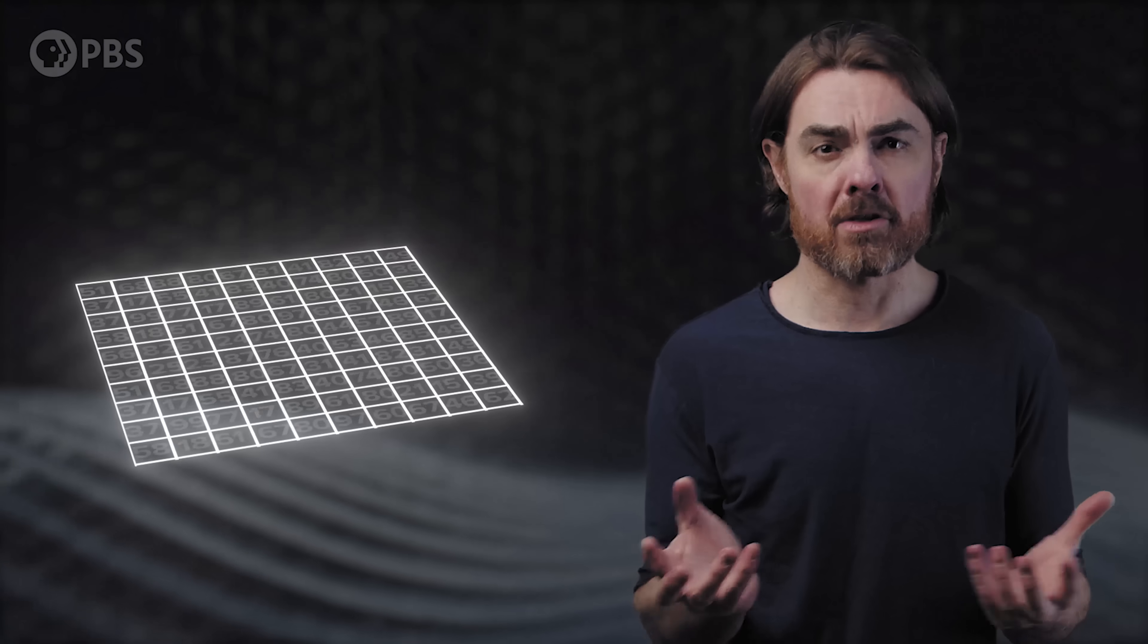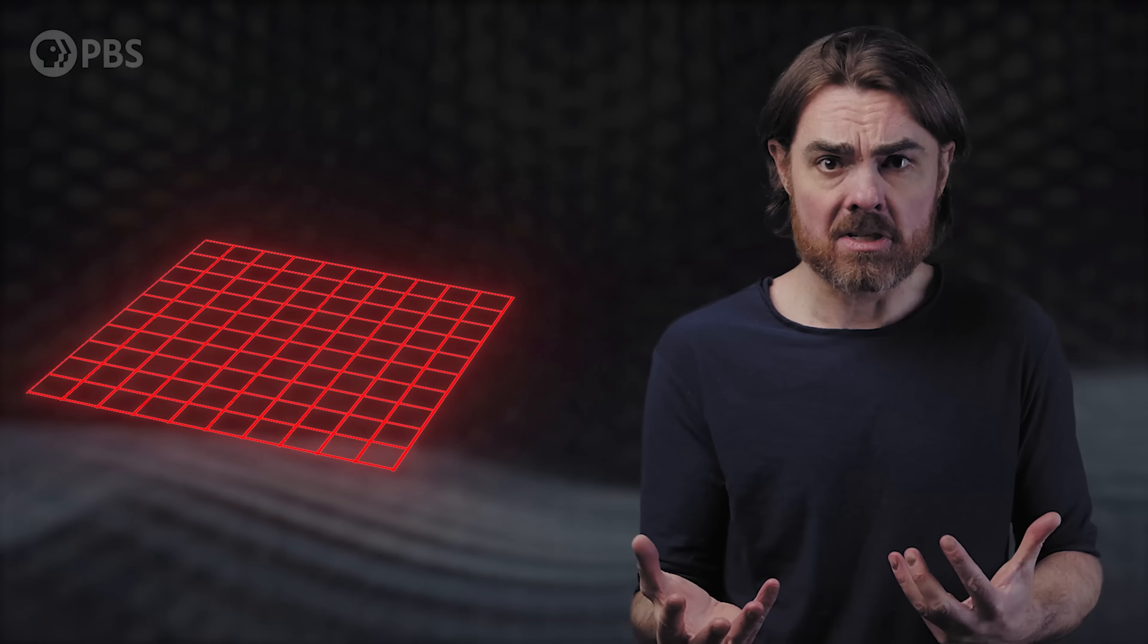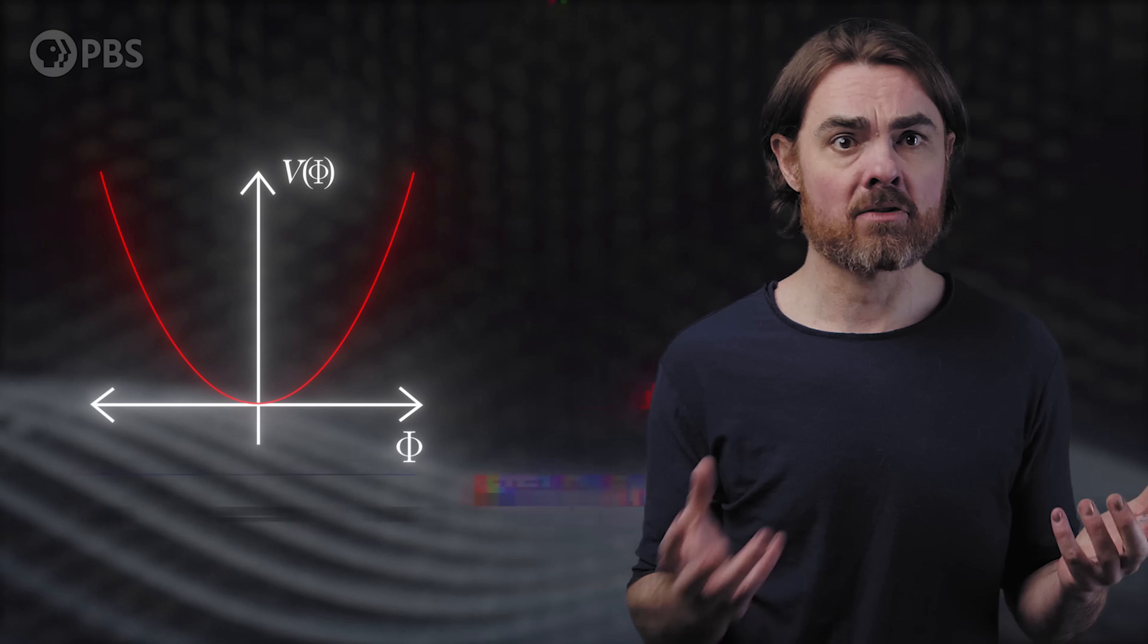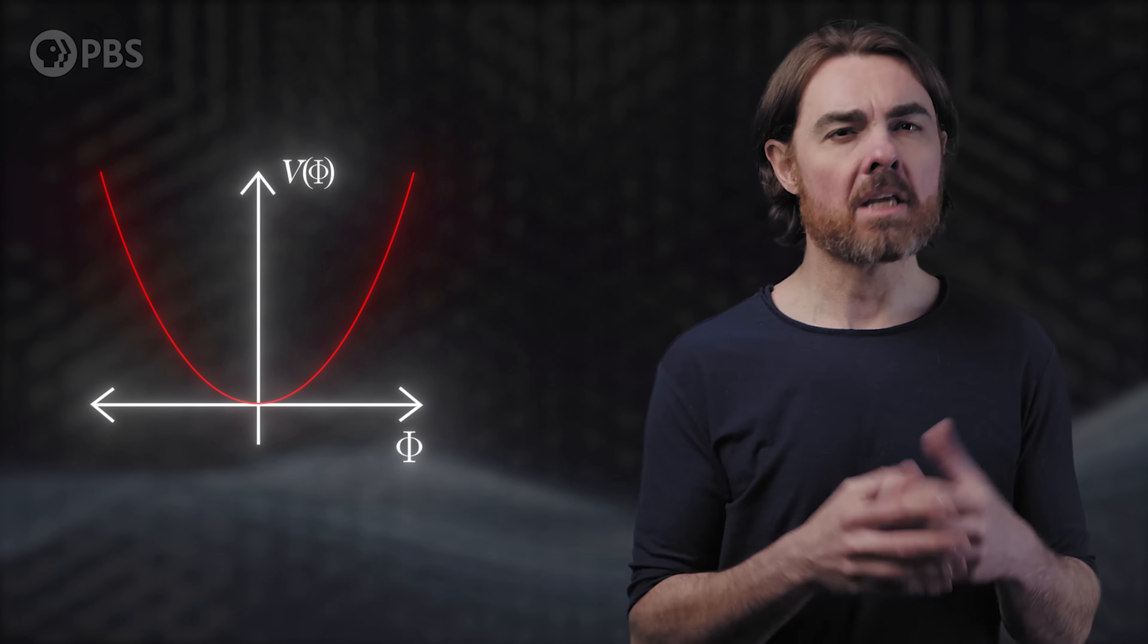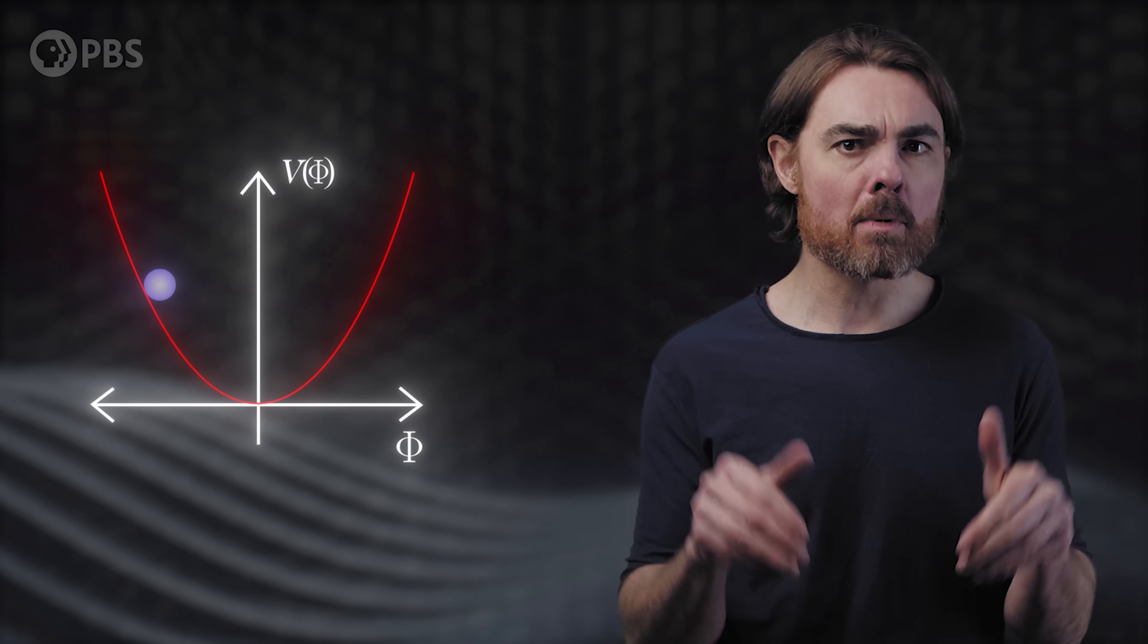Now, a quantum field is just some numerical property that the fabric of space can have. The field at any point can oscillate around that value. And those oscillations have quantized energy states. These vibrations can move through space and we see them as particles. A field's numerical value is called its field strength, and it depends on the amount of energy in the field, sometimes in complex ways. In the absence of particles, a field will always drop to the nearest minimum in energy. This is the vacuum state of the field.